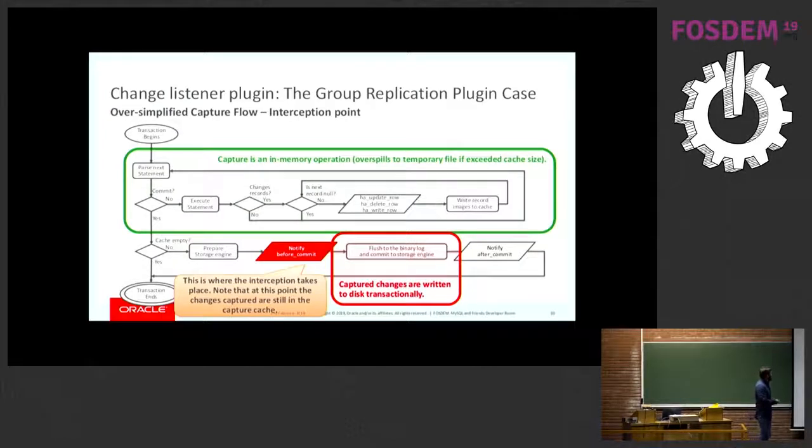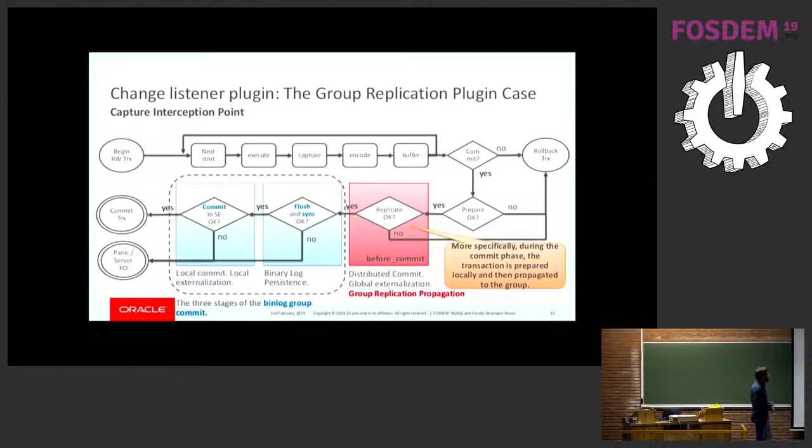So, the intersection takes place here, right before we flush to the bin log. Note that at this point in time, the changes are still in memory, in this buffer, in memory buffer. It's an IOCache, for those that have actually looked into the code. And this means that the cache is mostly in memory, so it has a fixed size memory buffer. If the transaction changes are larger than this buffer, it spills to disk. But at the end of the day, we can consider it just as a memory buffer. So, we take this buffer and we share it with group replication.